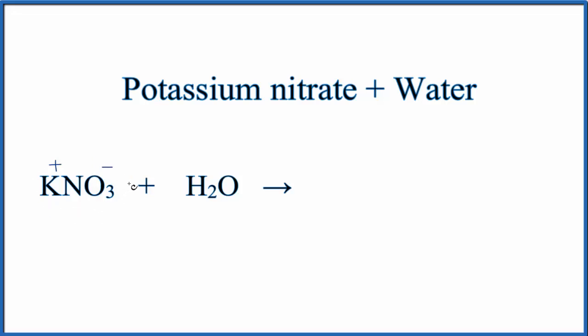So we have solid KNO3 plus liquid water, and when we put the solid in the liquid, this KNO3 is going to dissociate into its ions. So we'll have K+, the potassium ion, plus NO3-, the nitrate ion.